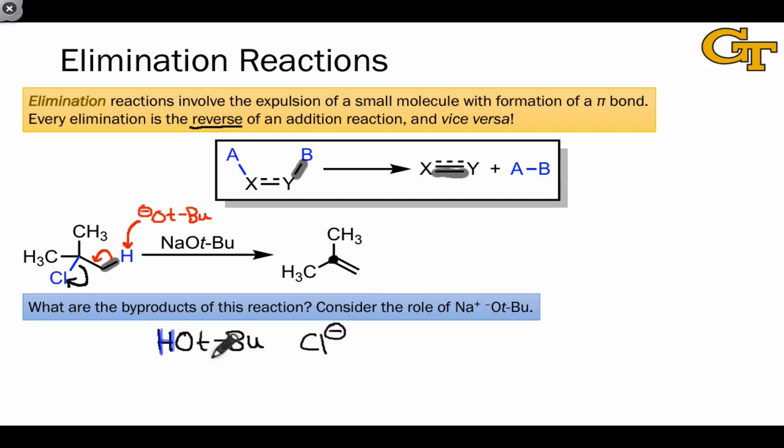And finally, the one thing that's missing to ensure overall charge balance on the product side is the Na+ cation, which is an innocuous spectator throughout this entire process. And so interestingly here, although H+ and Cl- aren't exactly generated directly, we can find them incorporated into the byproducts of the reaction.